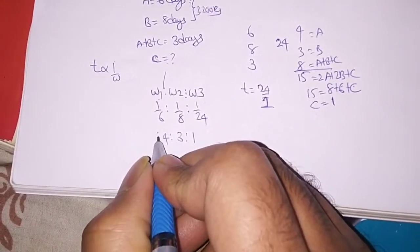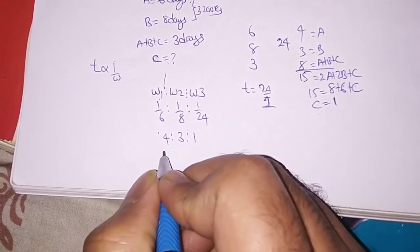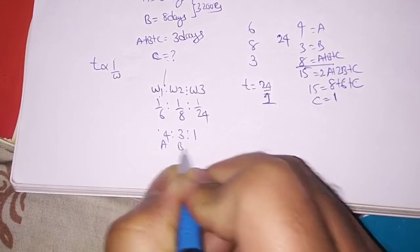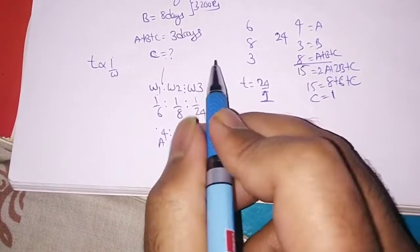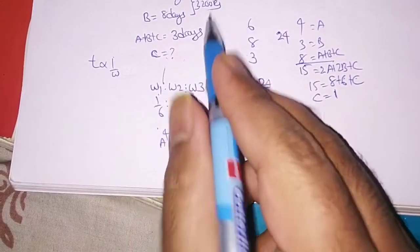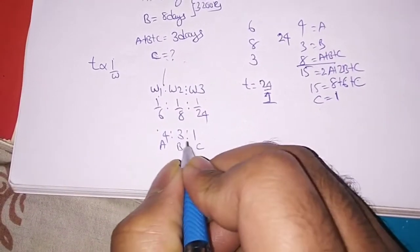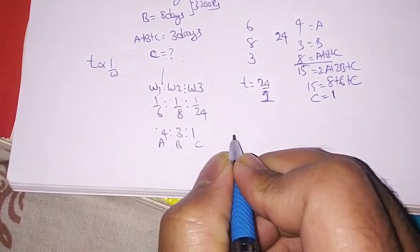And as you, if you know the ratios and ratios concept, this is A, this is B, this is C and we have to find how much is to be paid to C. This is, by using ratios concept, we can do it very easily.